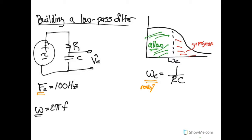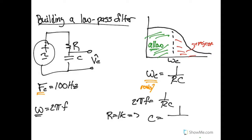So if we replace omega with 2πf, we can say 2πf = 1 over RC. To complete this circuit, let's assume a resistor value of 1 KΩ. That means the capacitor value is just 1 over 2πf times R. Flipping 2πf and C and plugging this into your calculator gives a capacitor value of 1.6 microfarads.